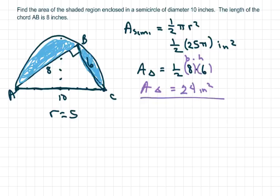Now we just subtract. We're going to take the area of the whole semicircle, which is 25π over 2 minus 24, and use the calculator, and that's approximately 15.27 inches squared.